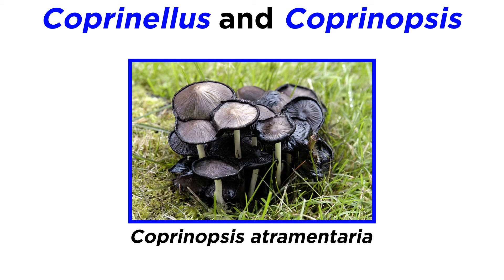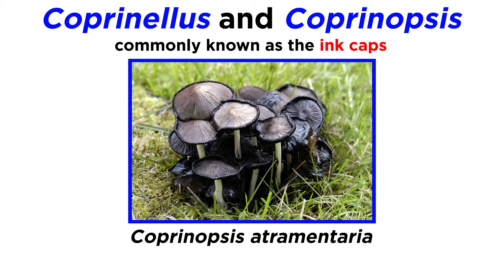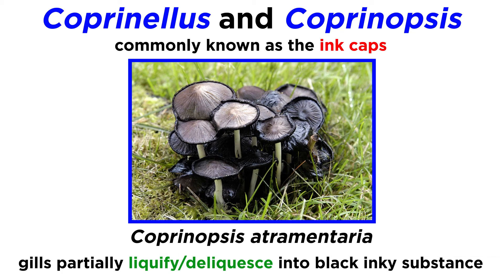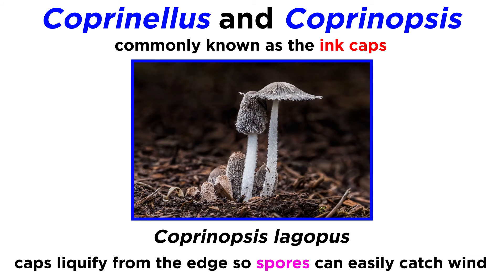Let's begin our discussion of Psathyrellaceae by discussing the similar genera Coprinellus and Coprinopsis, commonly known as the ink caps. The common name originates from a unique property of these mushrooms. As they age, the gills partially liquefy, or deliquesce, into a black, goopy, ink-like substance. This process is already quite captivating, but it is another demonstration of the genius of evolution. The caps of these mushrooms liquefy from the edges inward, so the maturing spores at the inner parts of the cap are in prime position to catch wind currents to disperse.